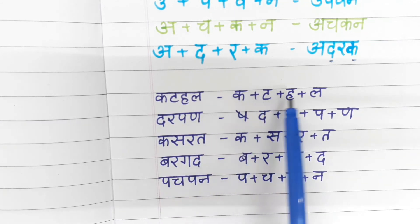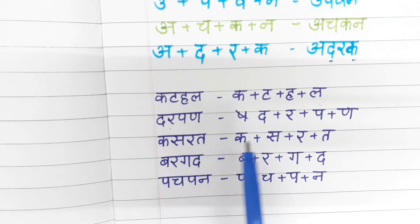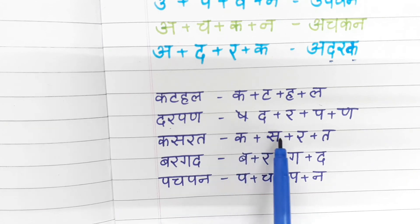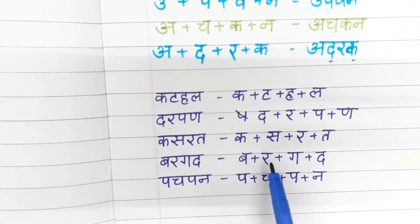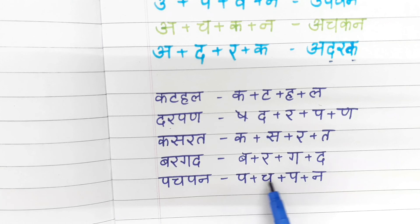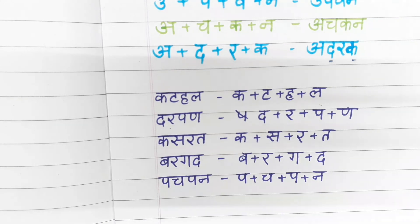If somebody tells you to write kathal split, you can write ka plus ta plus ha plus la. Da, ra, pa, na is darpan. Ka, sa, ra, ta is kasrat — we write ka plus sa plus ra plus ta, joining them with one sleeping line. Bargad: ba, ra, ga, ta. Pachpan: pa, cha, pa, na. This is the way you can teach your child and also give this kind of worksheet for practice if they are in UKG or grade 1.